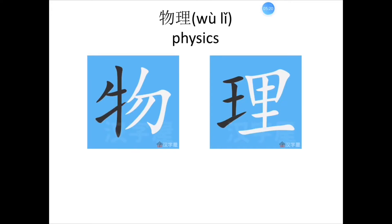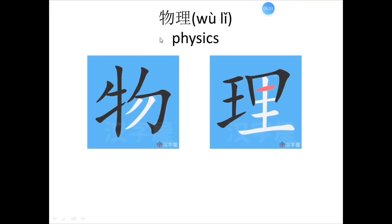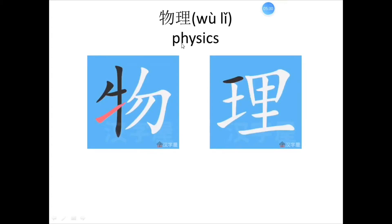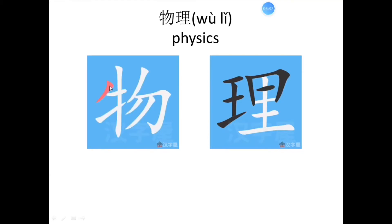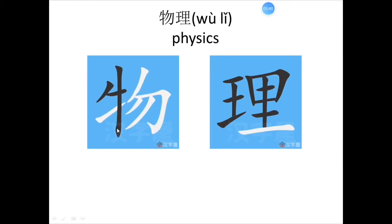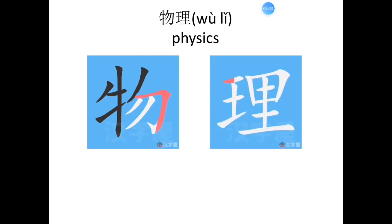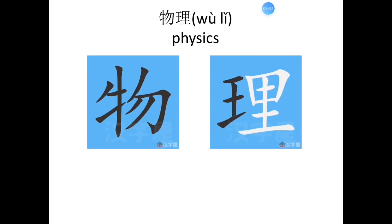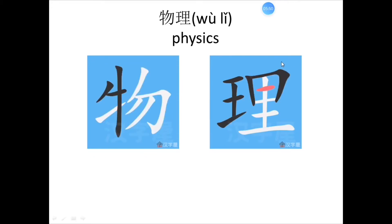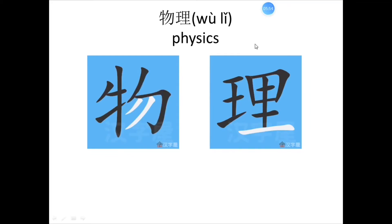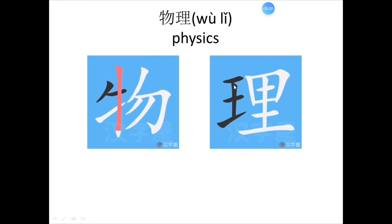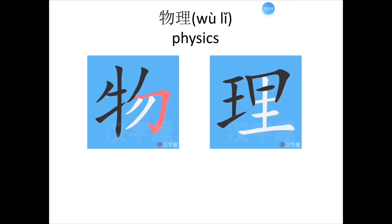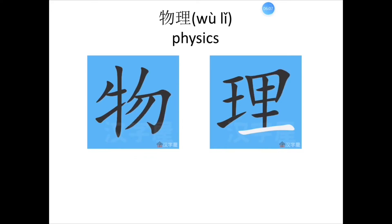请你看这个词。 Please look at this word. 物理, 物理. It means 'physics.' It's a noun. Let's see how to write it. Stroke count for 物: 一, 二, 三, 四, 五, 六, 七, 八. Now let's see how to write 理: 一, 二, 三, 四, 五, 六, 七, 八, 九, 十, 十一.